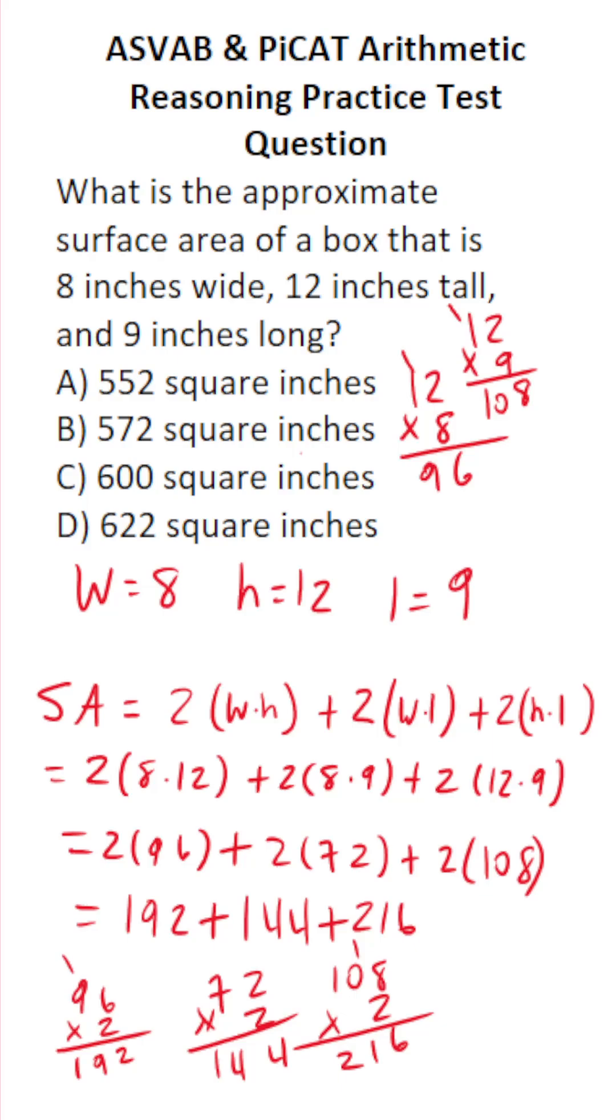I'm going to do it off to the side so as not to make any mistakes here. We have 192, 144, and 216. 6 and 4 is 10, plus 2 is 12, carry a 1. 4 and 1 is 5, 9 and 1 is 10, 10 and 5 is 15, carry a 1, 2, 3, 4, 5.